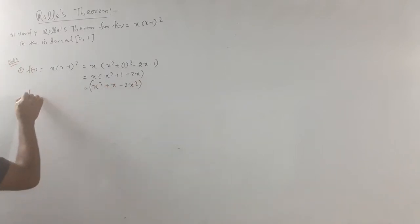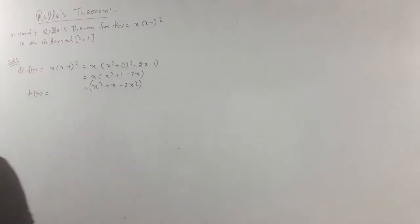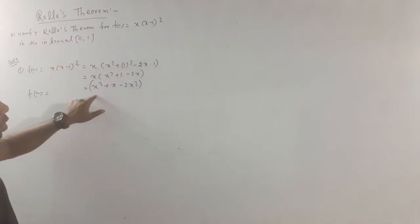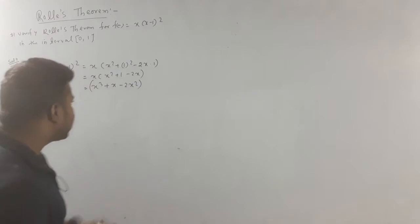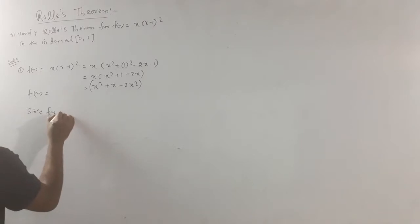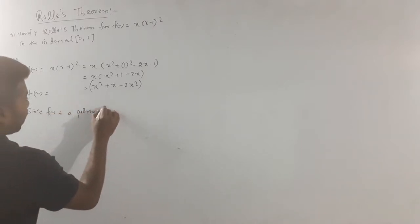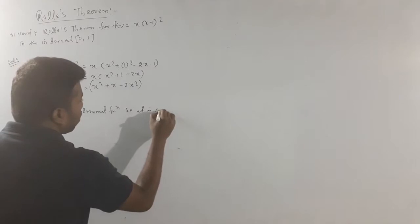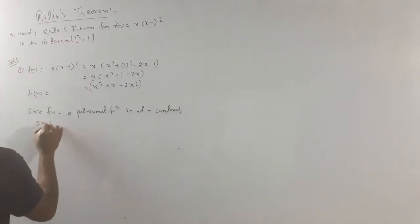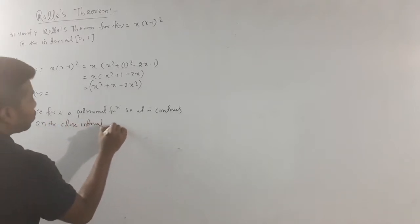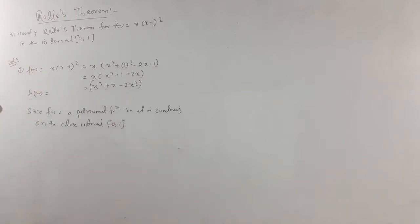Multiplying out, f of x equals x cubed plus x minus 2x squared. This is a polynomial function on the interval 0 to 1. Since f of x is a polynomial function, it is continuous on the closed interval [0, 1].